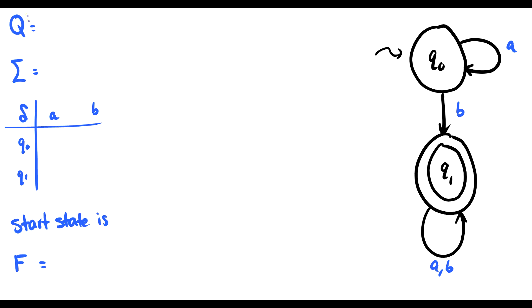So Q, that's our finite set of states. Well, we have two states here. We have Q0 and Q1. So Q is our set of states. Sigma is our alphabet. And it looks like we're just using the symbols A and B. Our alphabet is A, B. Our states are Q0, Q1.